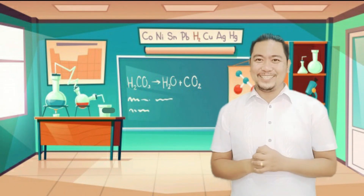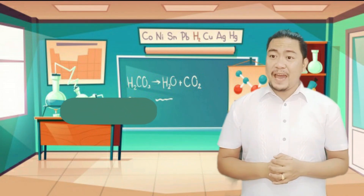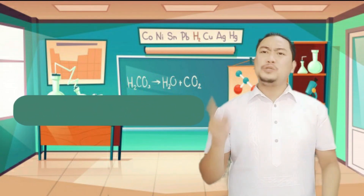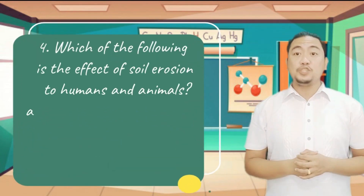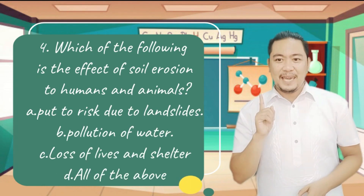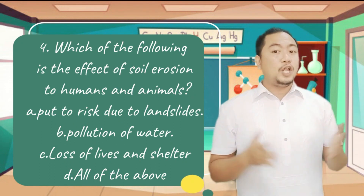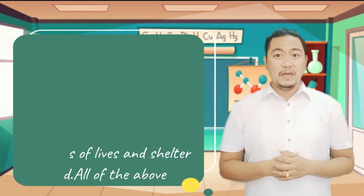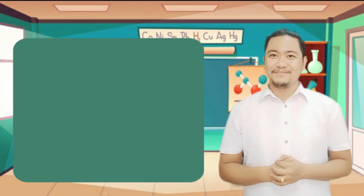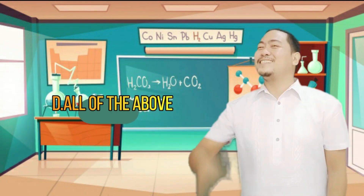Number 4. Which of the following is the effect of soil erosion on humans and animals? A. Put to risk due to landslides. B. Pollution of water. C. Loss of lives and shelter. D. All of the above. And the answer is correct — it's letter D. Great job learners!